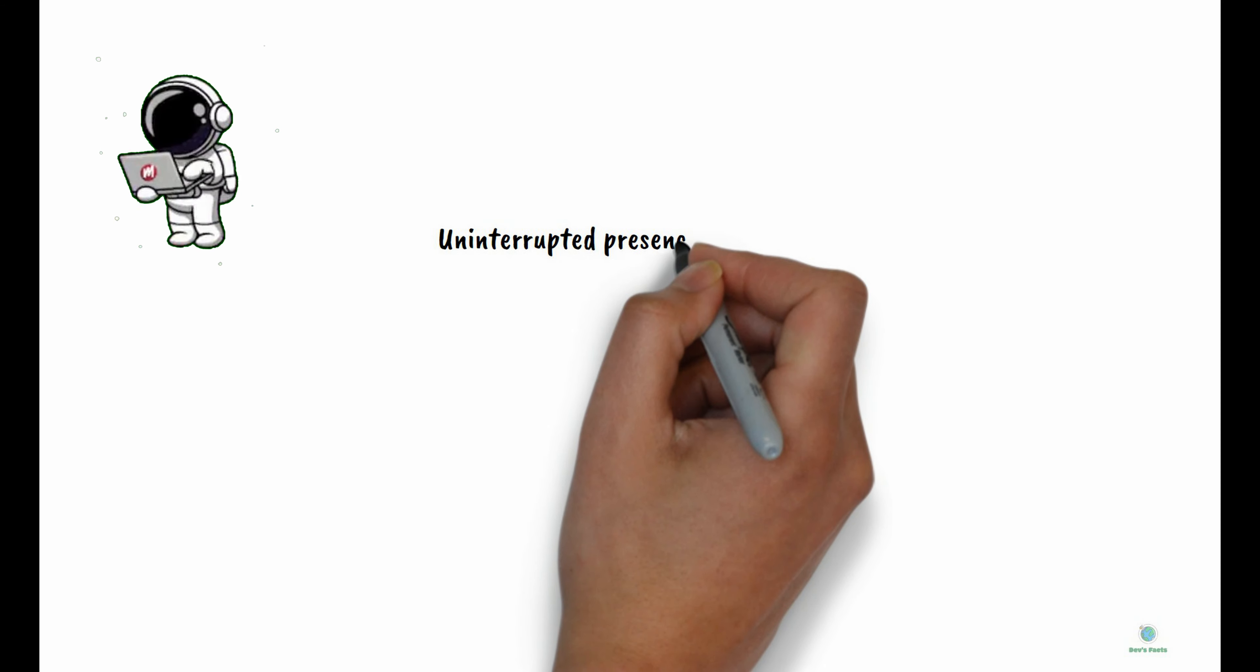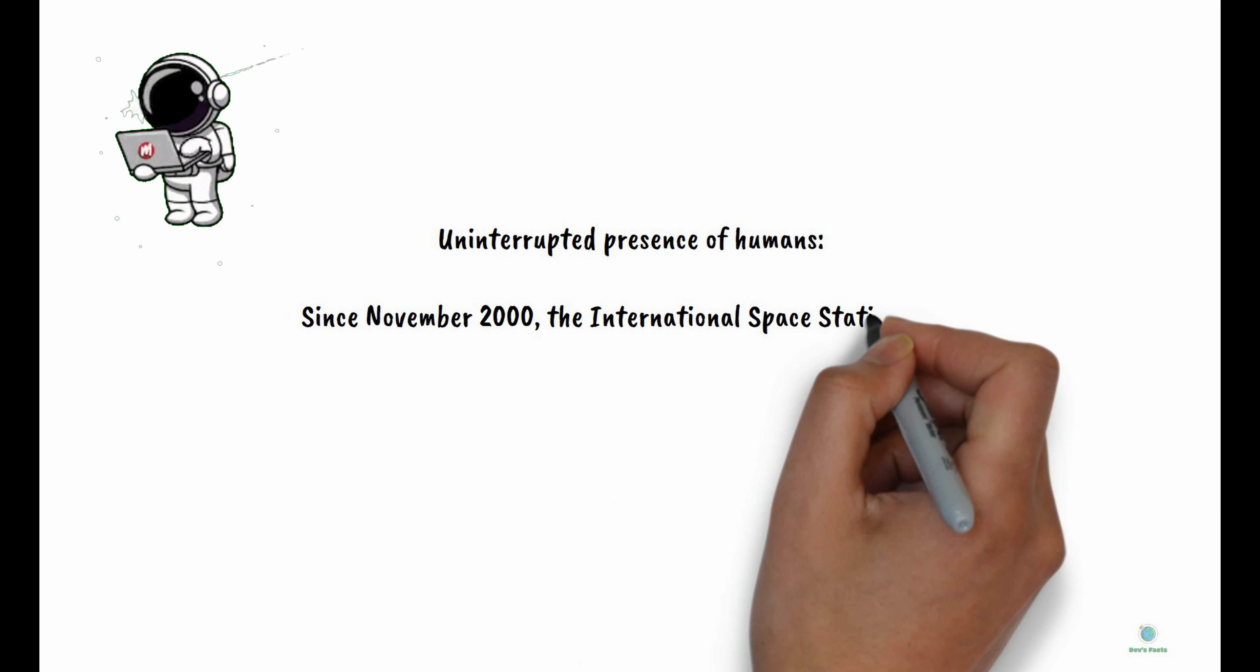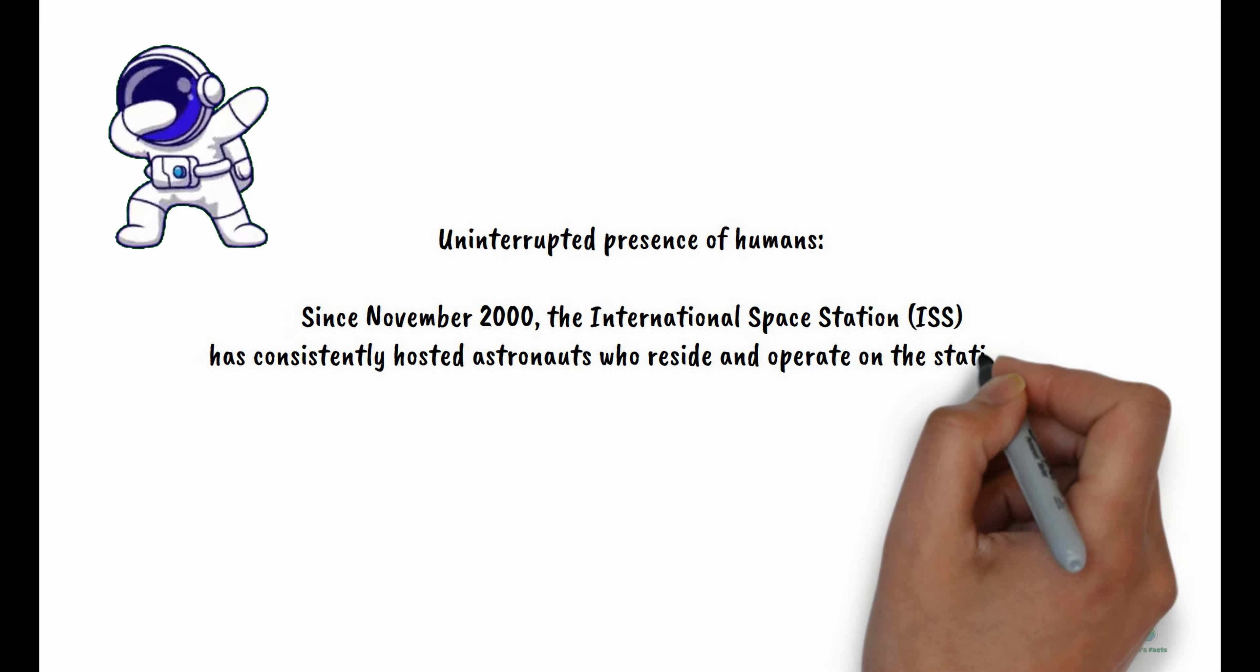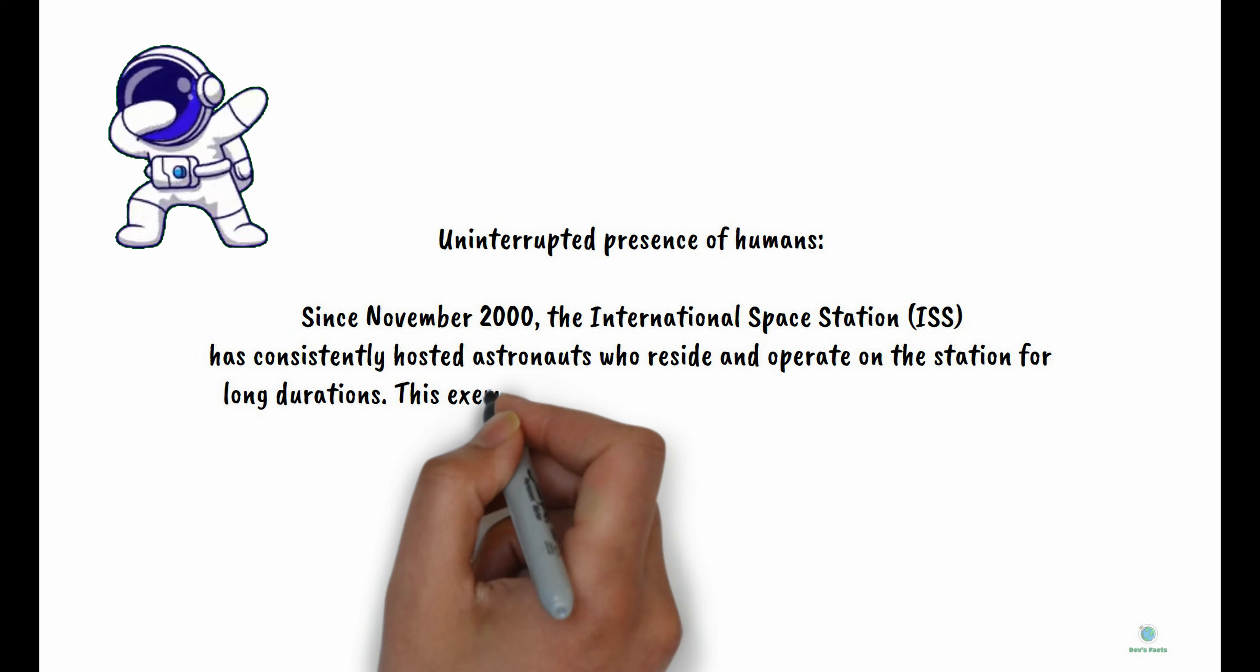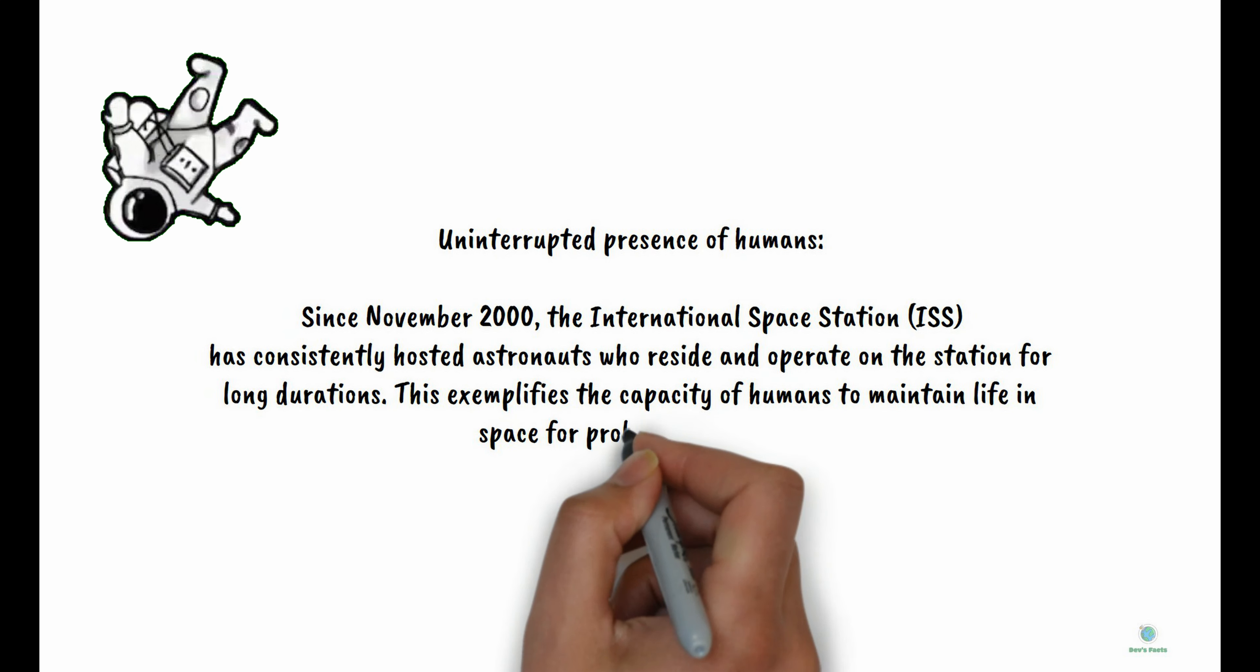Uninterrupted Human Presence: Since November 2000, the International Space Station has consistently hosted astronauts who reside and operate on the station for long durations. This exemplifies the capacity of humans to sustain life in space for prolonged periods.